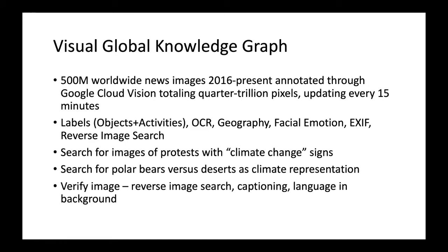Reverse image search is really interesting — it essentially takes that image, finds other appearances of it either in whole or in part across the web, and then looks at how it was captioned elsewhere. So we can see that a particular image has appeared a hundred different times on the web, and here's how it was captioned in each of those previous situations. This allows us to do things like search for protests that feature climate change — literally finding all news imagery featuring a protest where people are holding signs mentioning climate change.